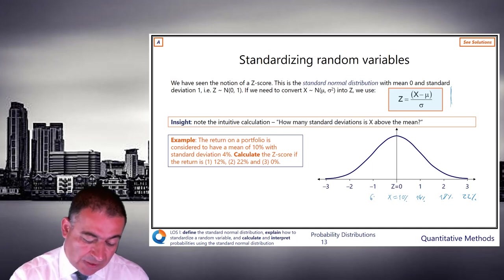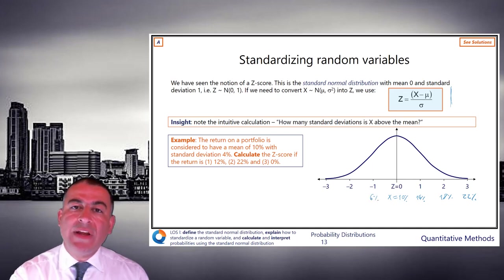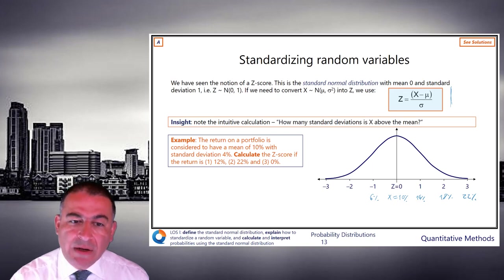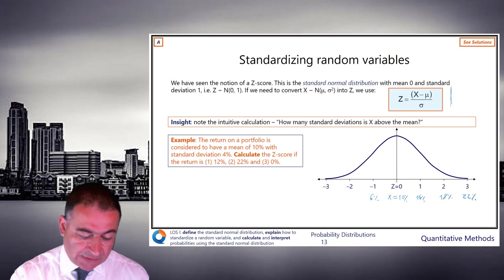Going downwards, 6%. That z equals minus 1. We're one standard deviation below the mean. We are one standard deviation of 4 below the mean of 10, hence 6.